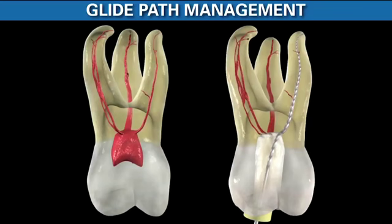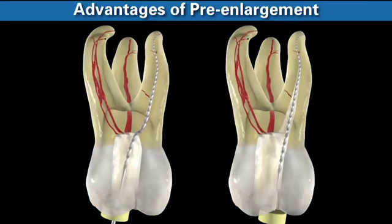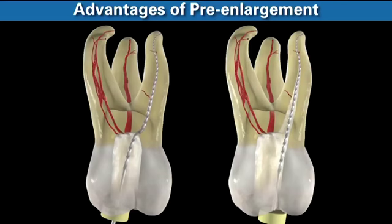The breakthrough I described and started teaching in the late 1970s was to pre-enlarge a canal. Pre-enlarging is similar to a restorative dentist reducing the occlusion and placing crown margins last. With pre-enlargement, the file is free in its upper two-thirds, and when you feel handle pressure, it's relaying that the file is engaging dentin towards its terminal extent. There are many advantages to pre-enlargement — I've written extensively about this, and you're welcome to visit my website or textbook to learn more.